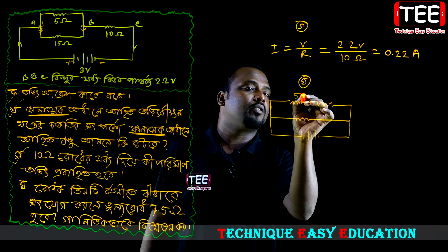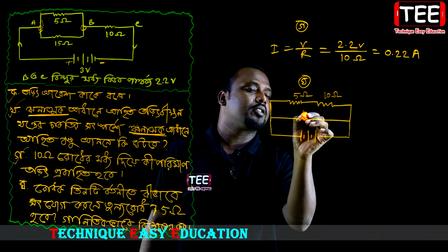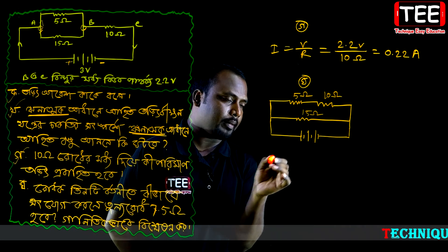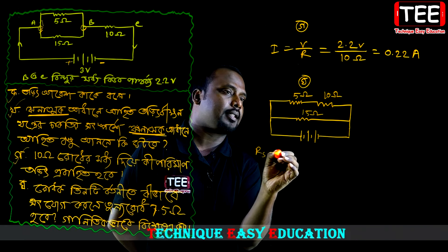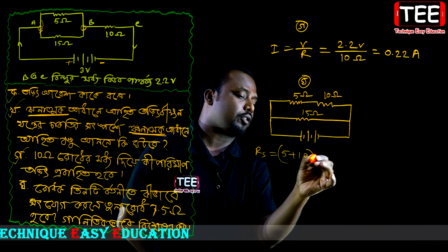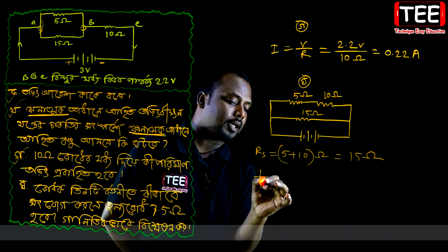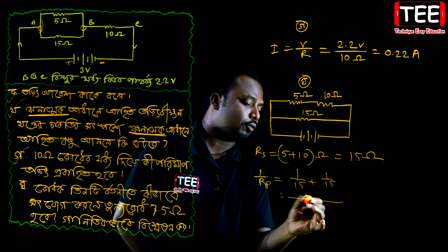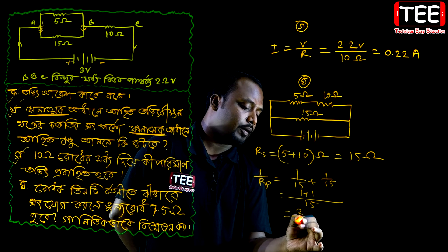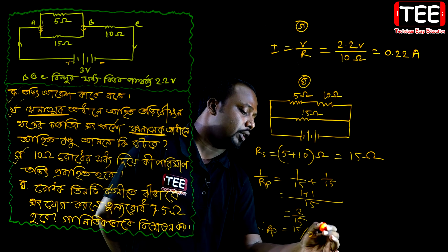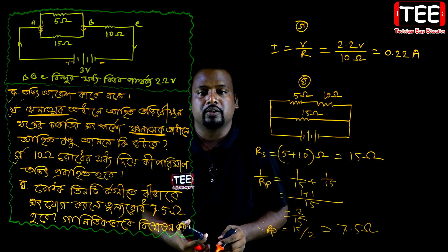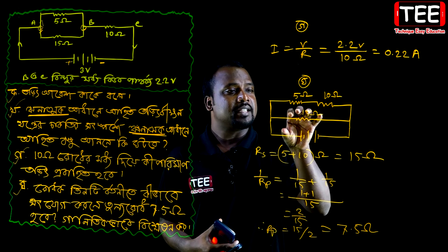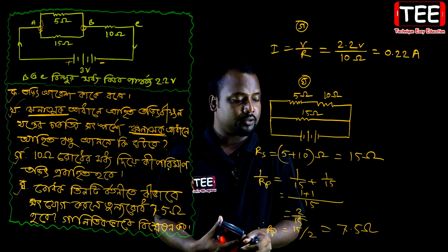It is 5 Ohm, 10 Ohm and 15 Ohm. We see that we have 15 Ohm high, meaning we have 7.5. When we see RS, we have 5 Ohm and 10. We have a parallel: 1 by Rp equals 1 by 15 plus 1 by 15, then 2 by 15, so RP is 7.5.